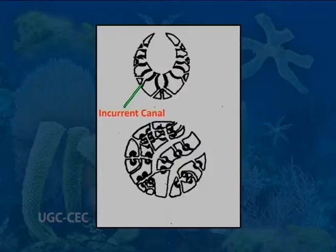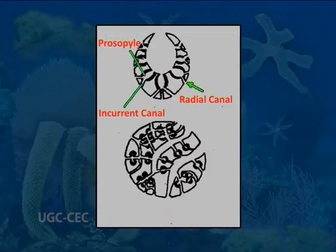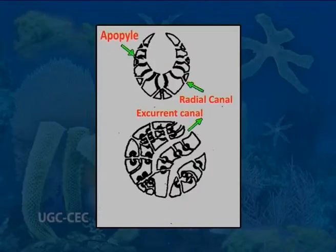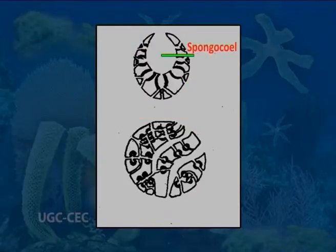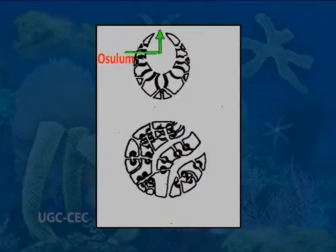Water enters the body via ostia and enters the incurrent canals, from where it passes into radial canals through prosopyles. From radial canals, water enters the excurrent canal through apopyles. Then water reaches the spongocoel through the gastral ostia and passes out by the osculum. The osculum is encircled by a fringe of monaxon spicules. Nutrition is holozoic. Respiration is aerobic; special organs of respiration are lacking. Oxygen dissolved in water is obtained externally through pinacocytes or internally by choanocytes.